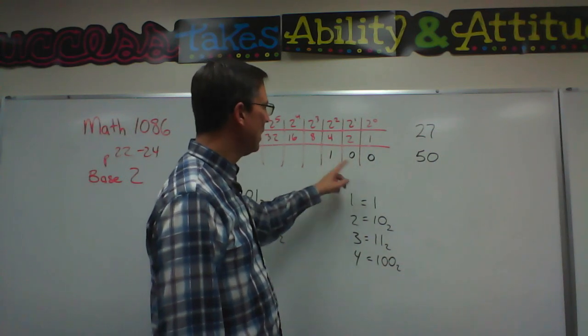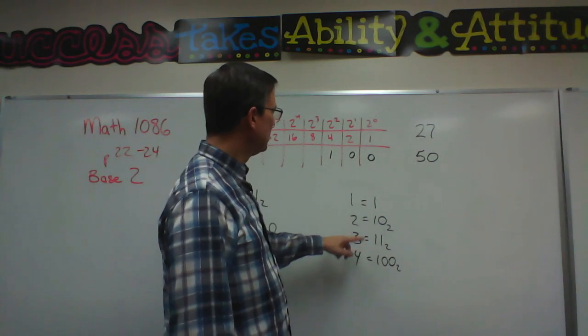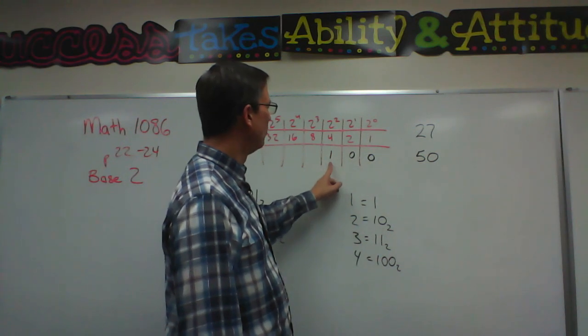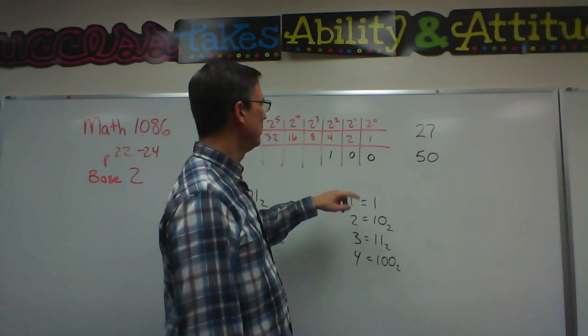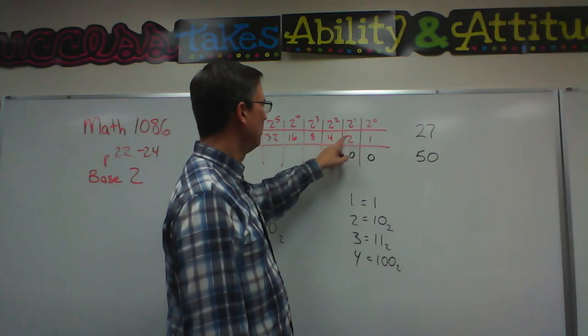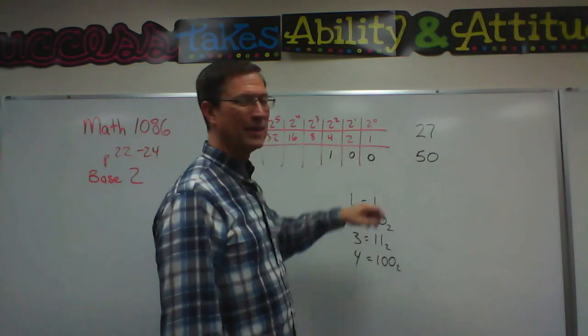So we can keep going, counting this way, and 5 would be a 4 and a 1. 6 would be 1, 1, 0. 7 would be adding up 4 plus 2 plus 1, which would be 1, 1, 1.